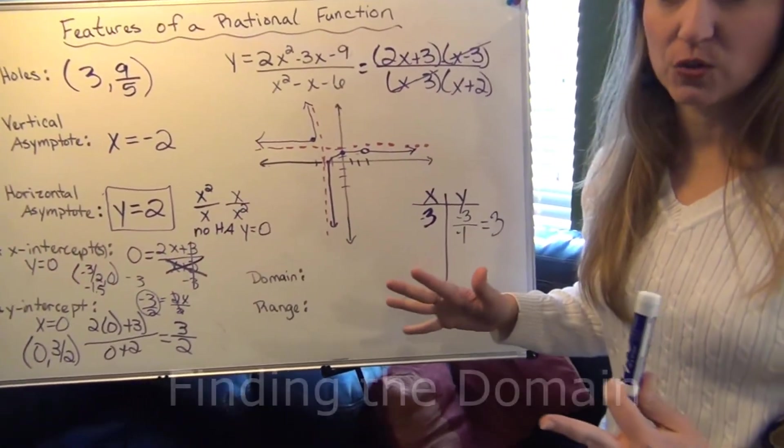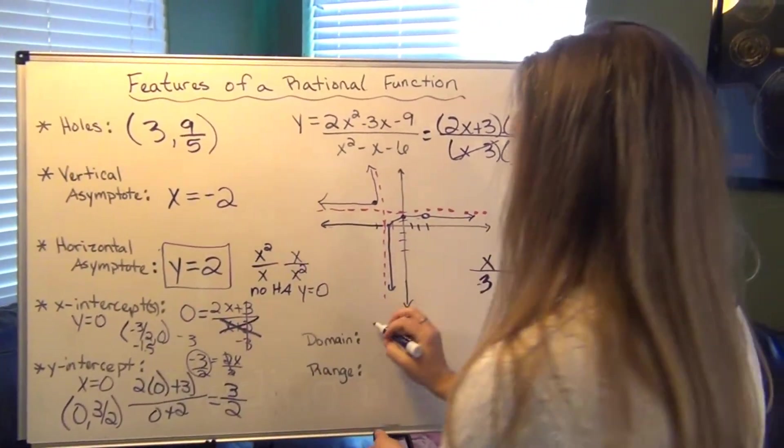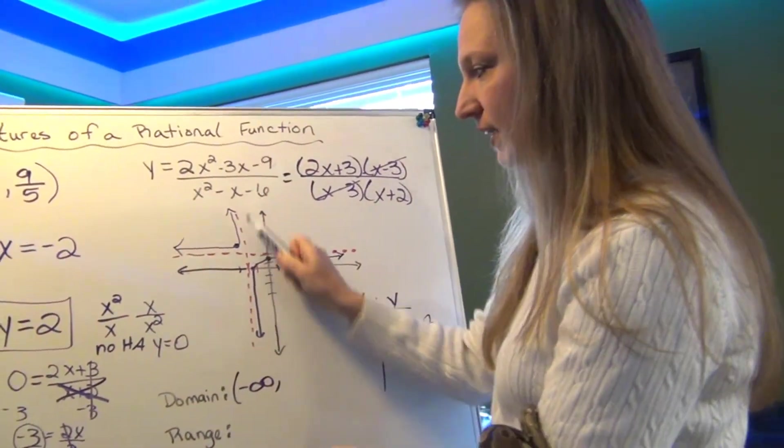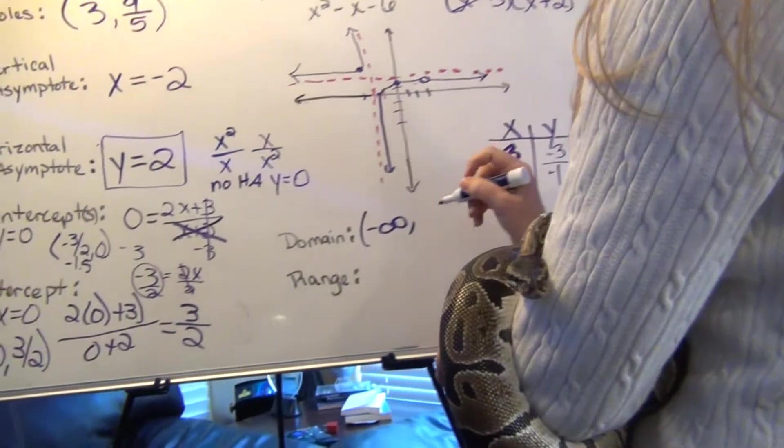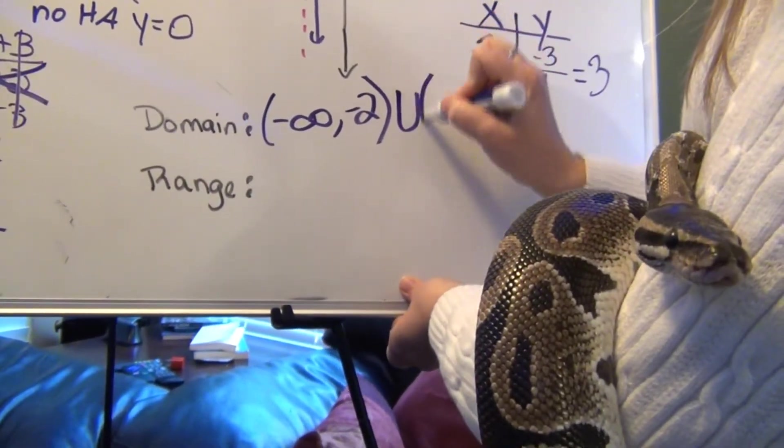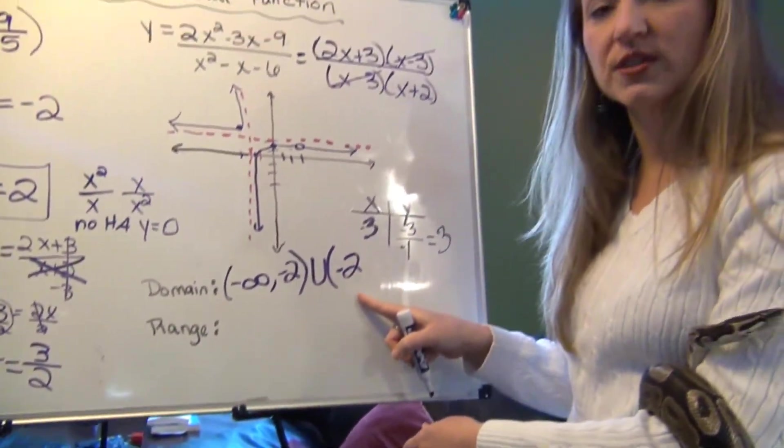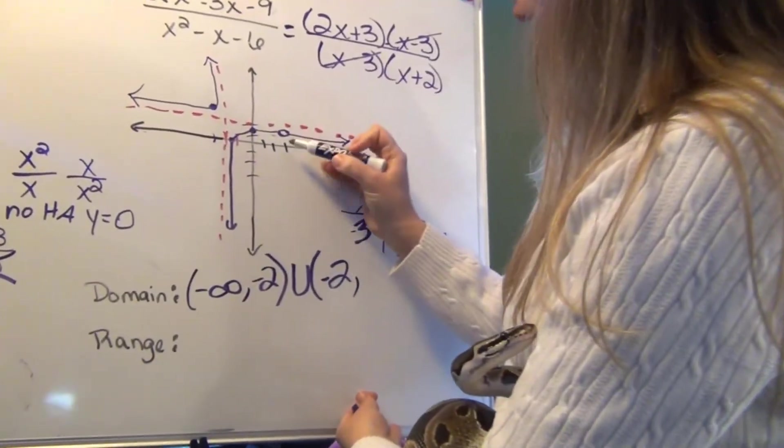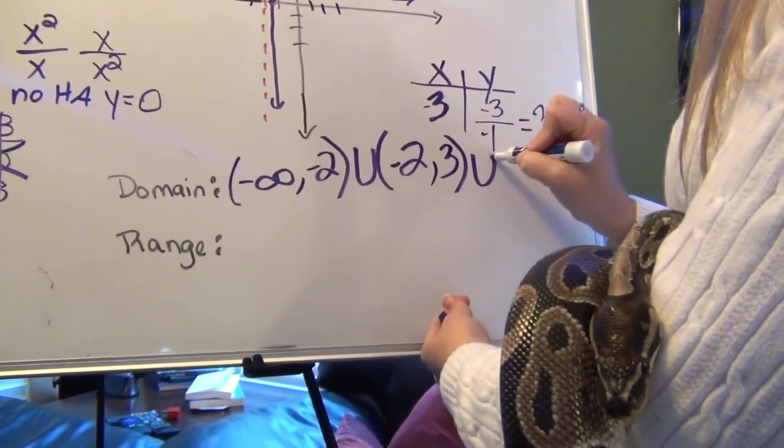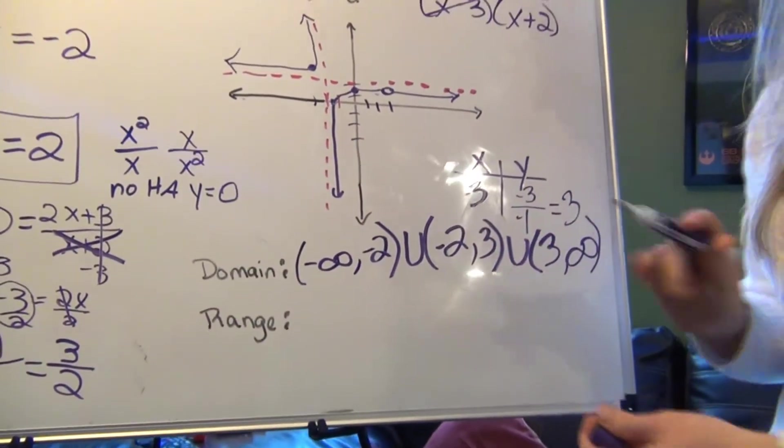Remember domain is all the x values that are represented in this graph. Well, the x's are going to keep going as far to the left as negative infinity. And working our way this way, it's going to skip over negative 2. It's undefined here at negative 2 because we have an asymptote there. So we're going to skip over negative 2. But then it's going to pick up again at negative 2. I'm using this u. This u means union because there's more than one part to this domain. So it skips over negative 2. But it also skips over positive 3 because we have a hole here. So we need to note that it goes from negative 2 to 3. And then after it goes over the hole at 3, it will go on to infinity. So this describes all the x values in this graph.